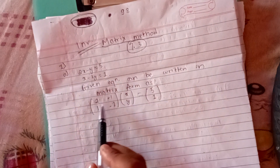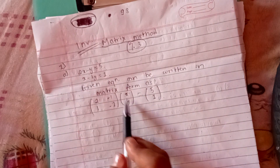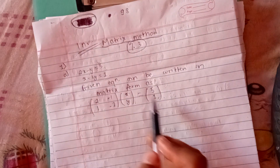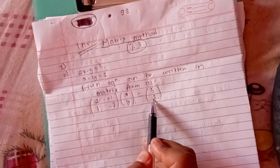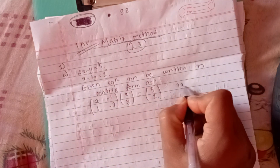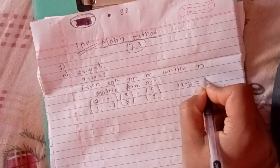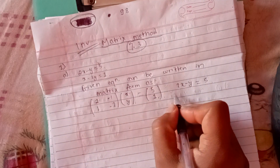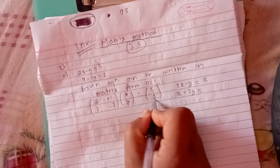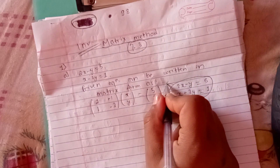The coefficient matrix A has entries 2, minus 1, 1, minus 2. We have to write the variable matrix, and the constant matrix has entries 5 and 1. So 2 times x is 2x and minus 1 times y is minus y, equal to 5. And 1 times x is x, and minus 2 times y is minus 2y, equal to 1.